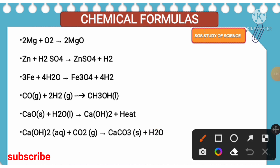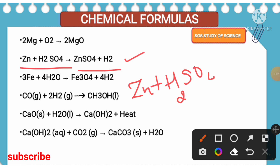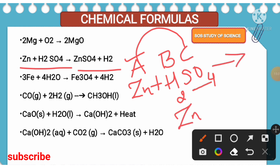The second equation: zinc combined with sulfuric acid to form zinc sulfate and hydrogen gas is released. This is already balanced. If they ask in the examination which type of chemical reaction it is, this is an example of a single displacement reaction. Zinc as A, hydrogen as B, and sulfate SO4 as C — A always combines with C. So zinc combines with the sulfate, zinc sulfate is formed and hydrogen gas is liberated. In the examination, they can also ask you to define single displacement reaction: a more reactive element displaces the less reactive element.